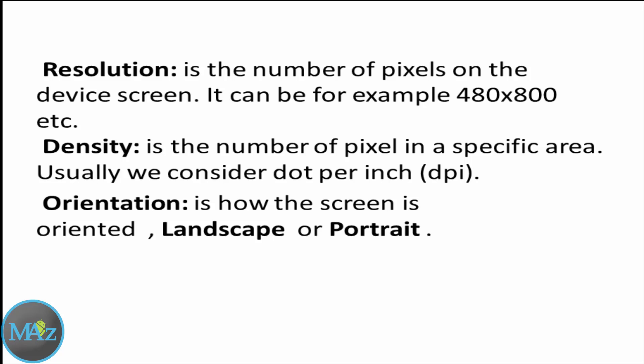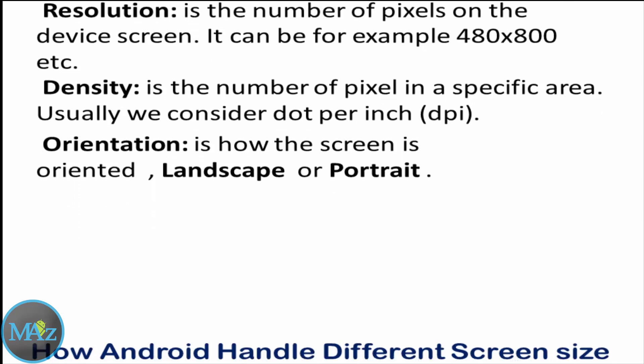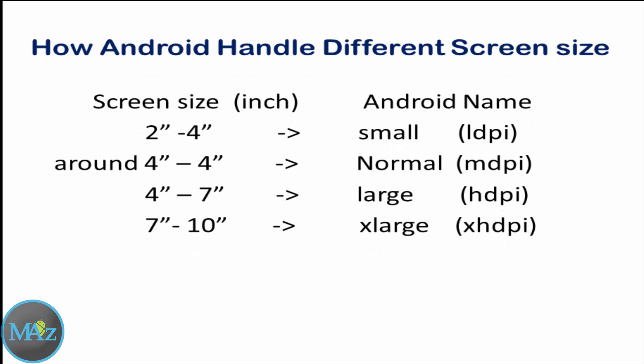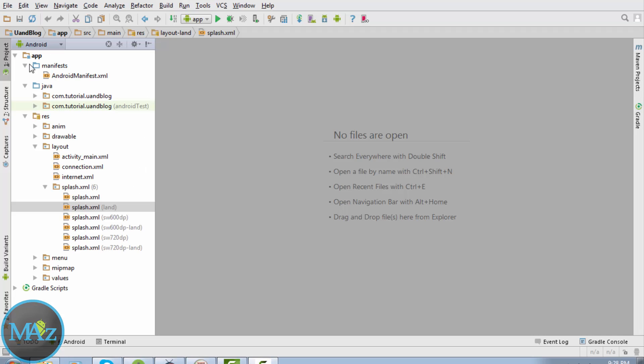Now, how does Android handle multiple screen sizes? For 2 to 4 inch screens, the Android screen name is 'small screen', denoted by LDPI. Around 4 inches it's denoted as 'normal screen size' or MDPI. From 4 to 7 inches it is 'large screen' or HDPI. From 7 to 10 inches it is called 'extra large screen', denoted by XHDPI. Besides these, in today's Android market there are more screen types, such as Android TV screens and Android Wear screens.